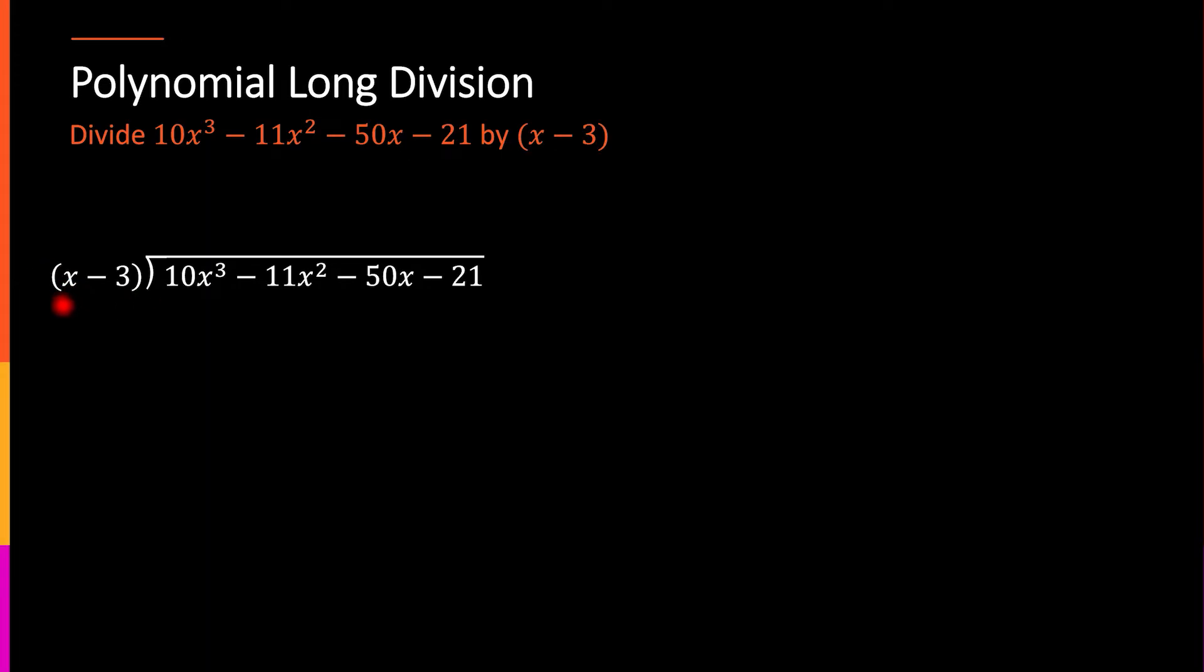and whatever we're dividing into, in this case, this 10x³. So, we're going to take this 10x³ and divide by that first piece, this x. When I do that, I get 10x², and then I'm going to use this as the thing I put up top. So, I'm going to write 10x² up there,